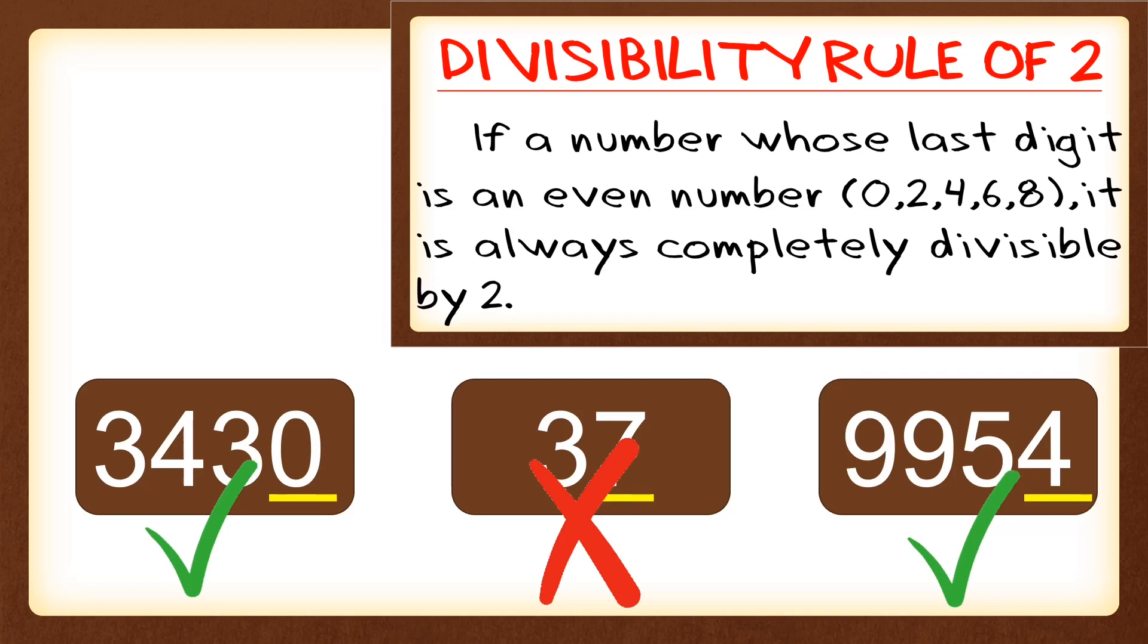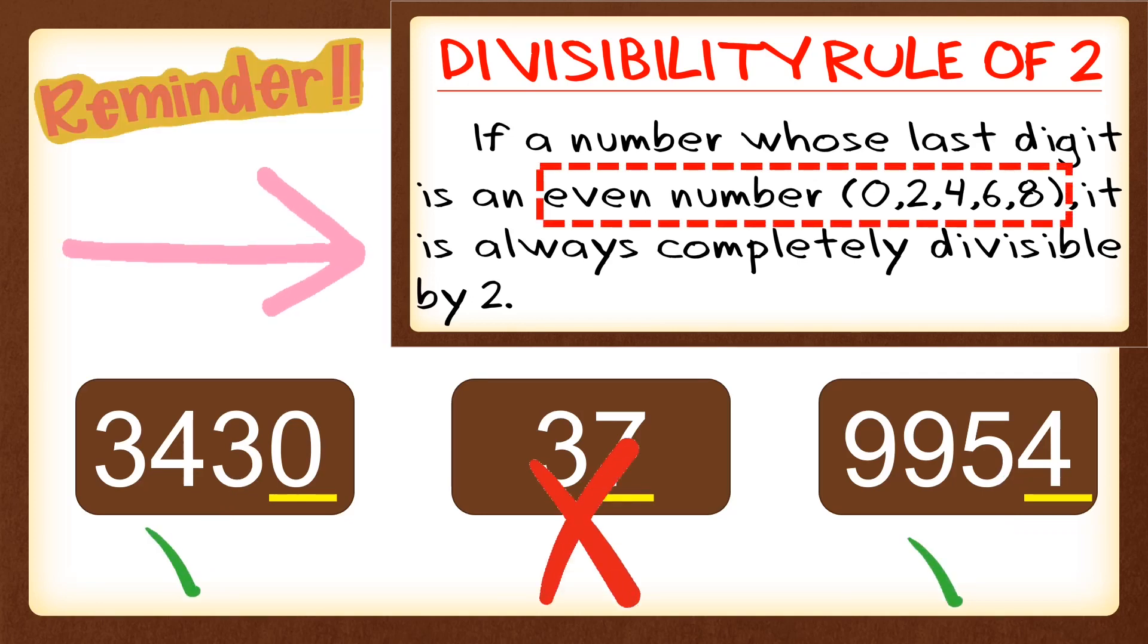So again, a reminder: a divisibility rule of 2 if the last digit is an even number. So we're going to look at the last digit, and if the number is an even number, it is divisible by 2.